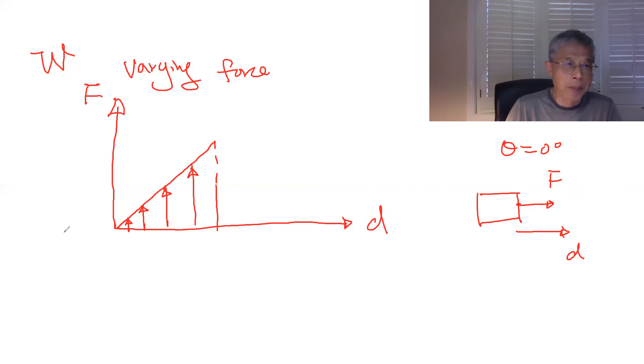So we know this work done by this varying force is going to be WF, which is equal to this F. So every single moment, the F is a little different, right? So the F, so we're going to call, let's say, this is D1, right? And that's the F1. So B.